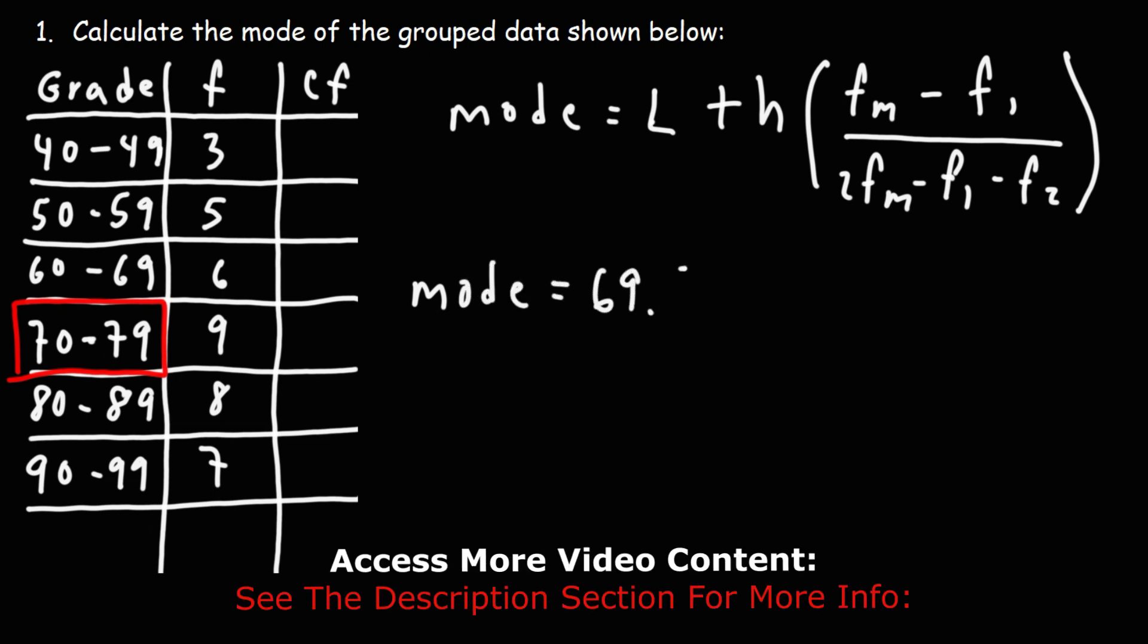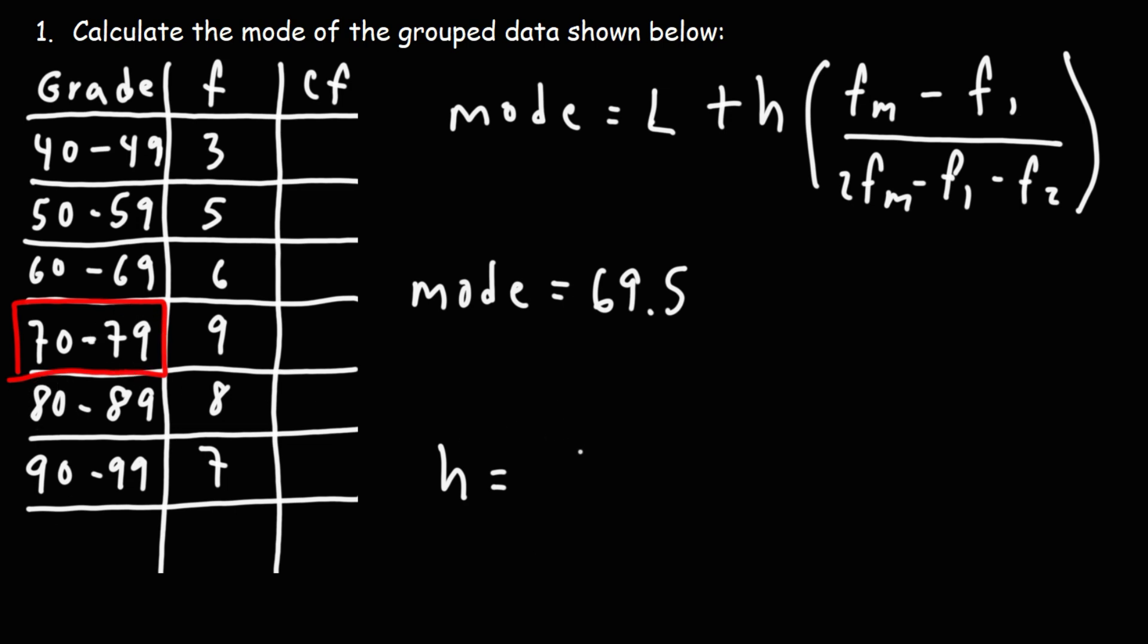Now, H is going to be the difference between the upper boundary and the lower boundary of that class. The upper boundary, which is going to be the midpoint of 79 and 80, that's 79.5. The lower boundary we know is 69.5, so the size of the interval is 10. So that's H. We don't want to do 79 minus 70 because that will give us 9 and the answer will be different.